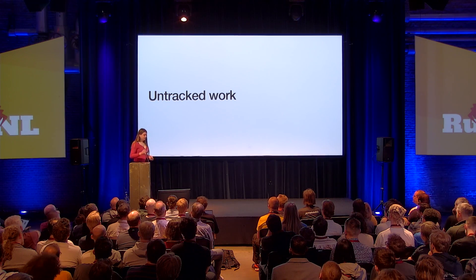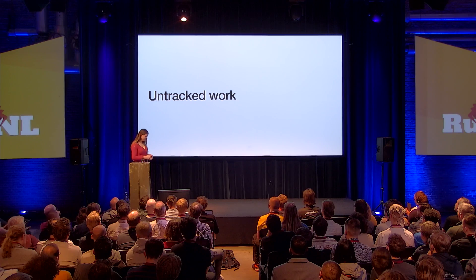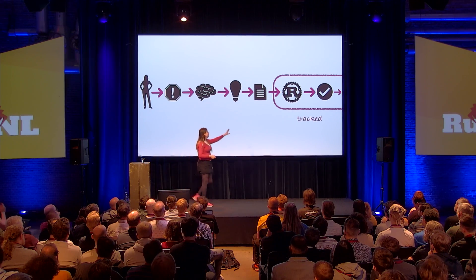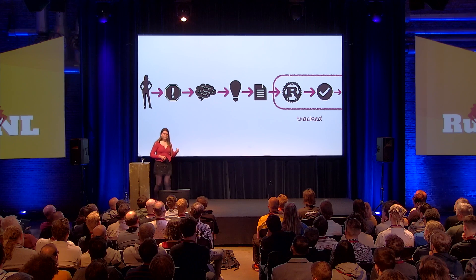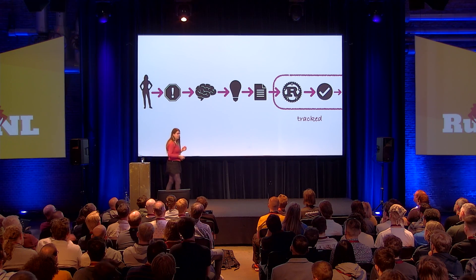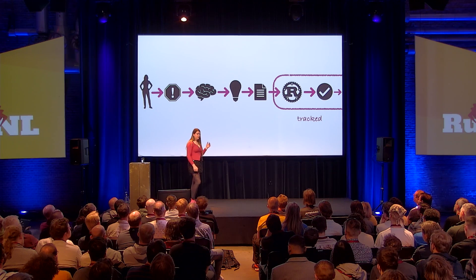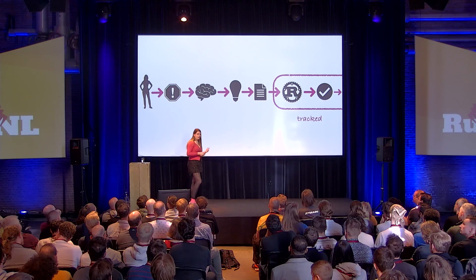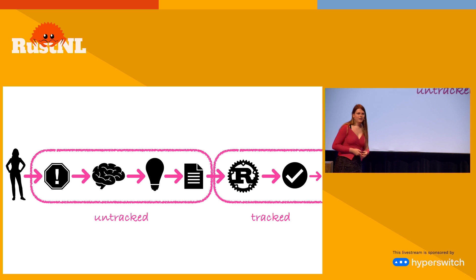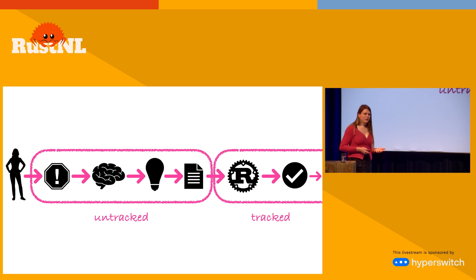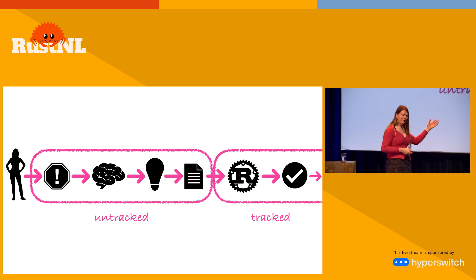So I want to talk about tracked and untracked work. The part we track in the Rust project is: if you submit an RFC, it becomes a pull request on the RFCs repository. You can see the discussion, whether it's been approved, outstanding questions, and all the steps of stabilization. But all of the earlier stuff is untracked. We don't have an overview of all the problems you have — most of them we never even hear about, because the only things we accept as written-down things are solutions, not problems. So all of this stays untracked and invisible to us.